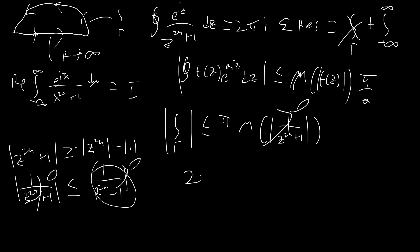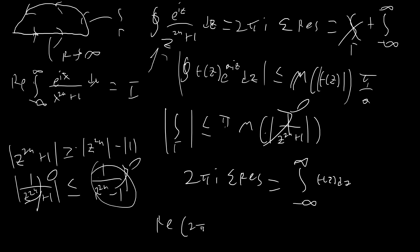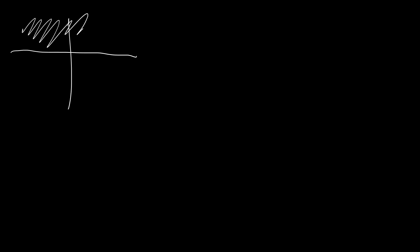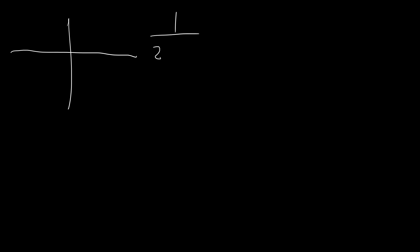That means that 2πi times the sum of the residues is equal to our real axis integral. So the real part of 2πi times the sum of the residues equals our original integral. Now let's talk about our residues. We only have to consider residues in the upper half plane, because our contour doesn't cover the bottom area. The residues are going to come from 1 over z to the 2n plus 1.